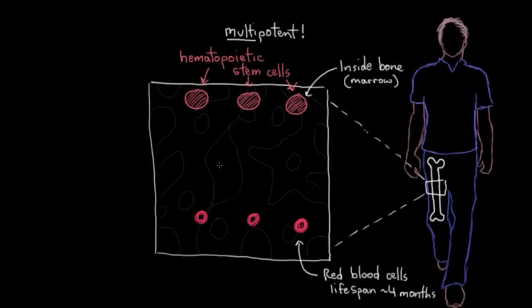but only ones within a specific family. In this case, blood cells, and not, for example, cells of the nervous system or the skeletal system. So our hematopoietic stem cells are always busy churning out new blood cells. Red blood cells to carry oxygen for us and white blood cells to keep our immune system nice and strong.